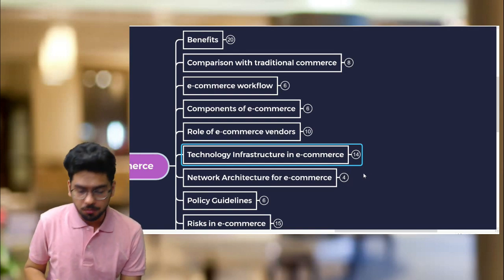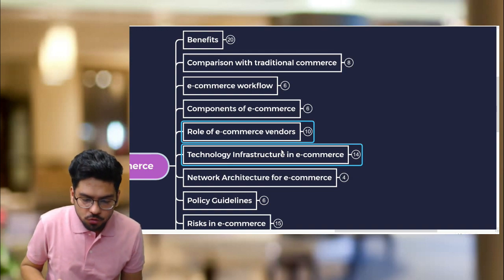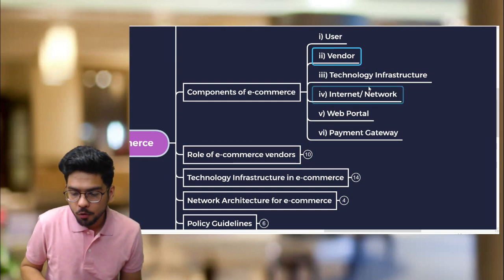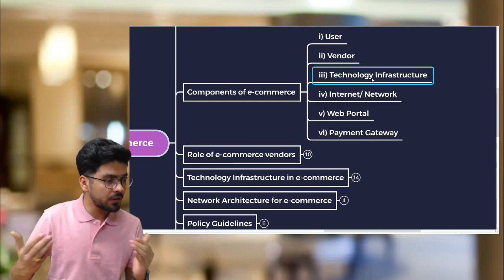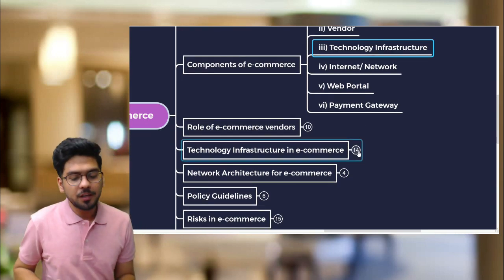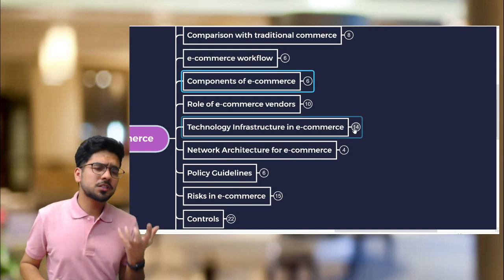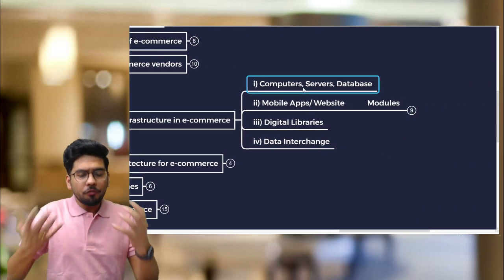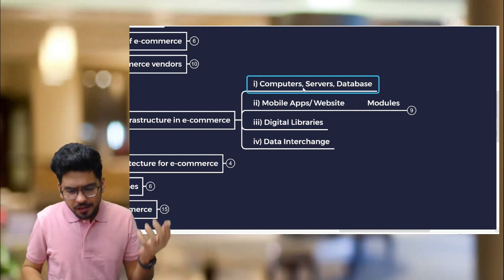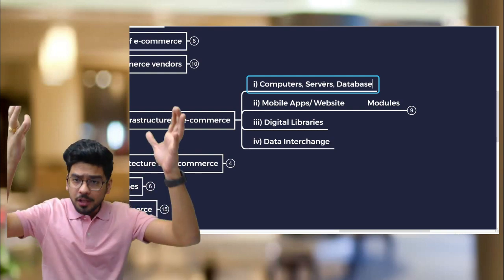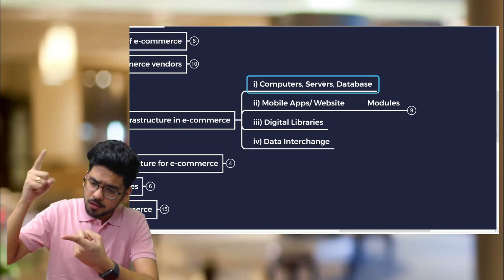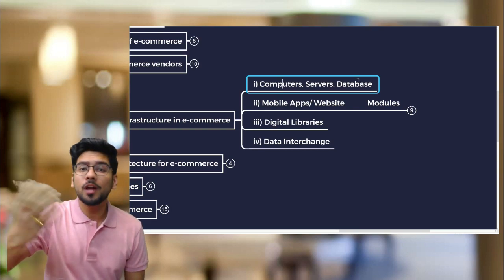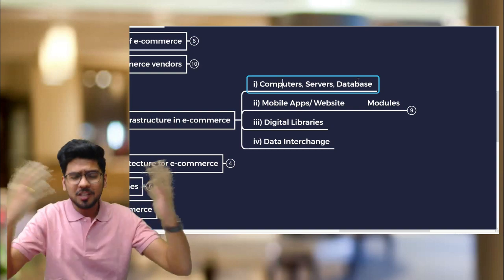The sixth topic is technology infrastructure in e-commerce. Any e-commerce vendor needs to maintain certain technology infrastructure. The first element is computer servers and databases — servers store all product information including descriptions, validity periods, and pricing.